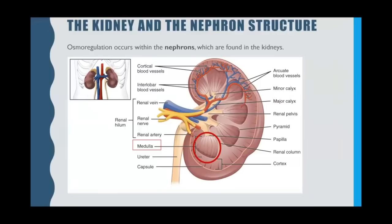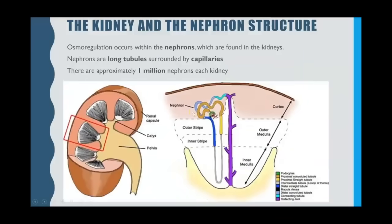Starting off with an overview of the kidney — you don't actually need to know the structures in detail. All you need to know is that the filtering and osmoregulation, which will be in a later video, occur in the nephrons. The nephrons are found within the medulla. The nephrons are these long tubules which are surrounded by capillaries, and you have about one million nephrons in each of your kidneys.